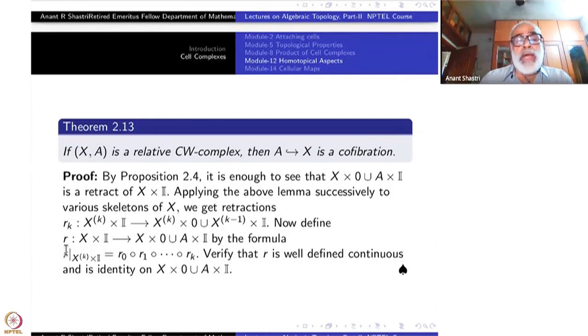Now define R from X×I to X×0 ∪ A×I by the following formula: when restricted to X_k×I, namely when x belongs to X_k, define it as R_0 ∘ R_1 ∘ ... ∘ R_K. You take R_K of that - it will be in X_{k-1}×I - then you take R_{k-1}, and so on. Finally you take R_0 to come back to the relative part A itself. That's the meaning of this.